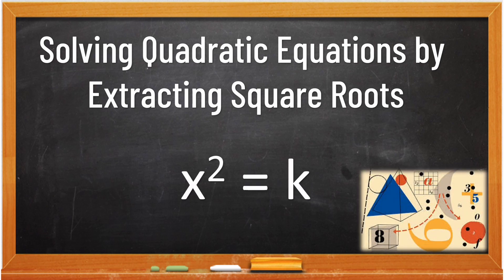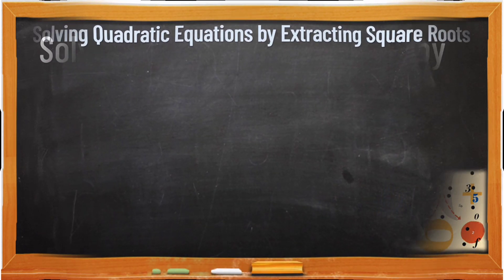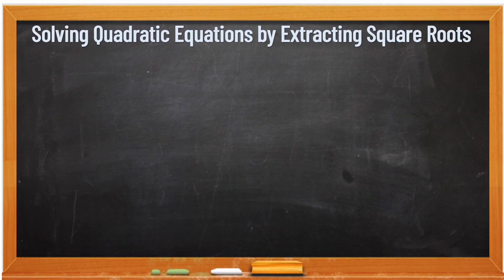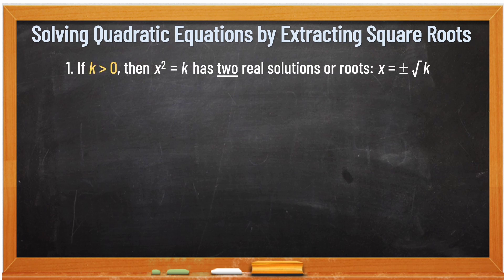Kailan ba natin siya ginagamit? Ginagamit natin ang extracting the square roots kung ang ating equation is in this form: x squared is equal to k. Now, let's find out the properties. Number one: if k is greater than zero, then x squared is equal to k has two real solutions or roots, and that is x is equal to positive or negative square root of k.